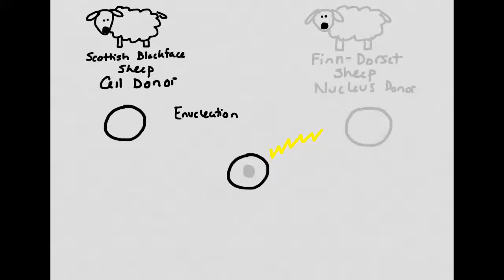Scientists then fused the nucleus from the white sheep with the egg cell from the black sheep using a jolt of electricity. They repeated this process 277 times, each time using a nucleus from a white sheep and an egg cell from a black sheep.